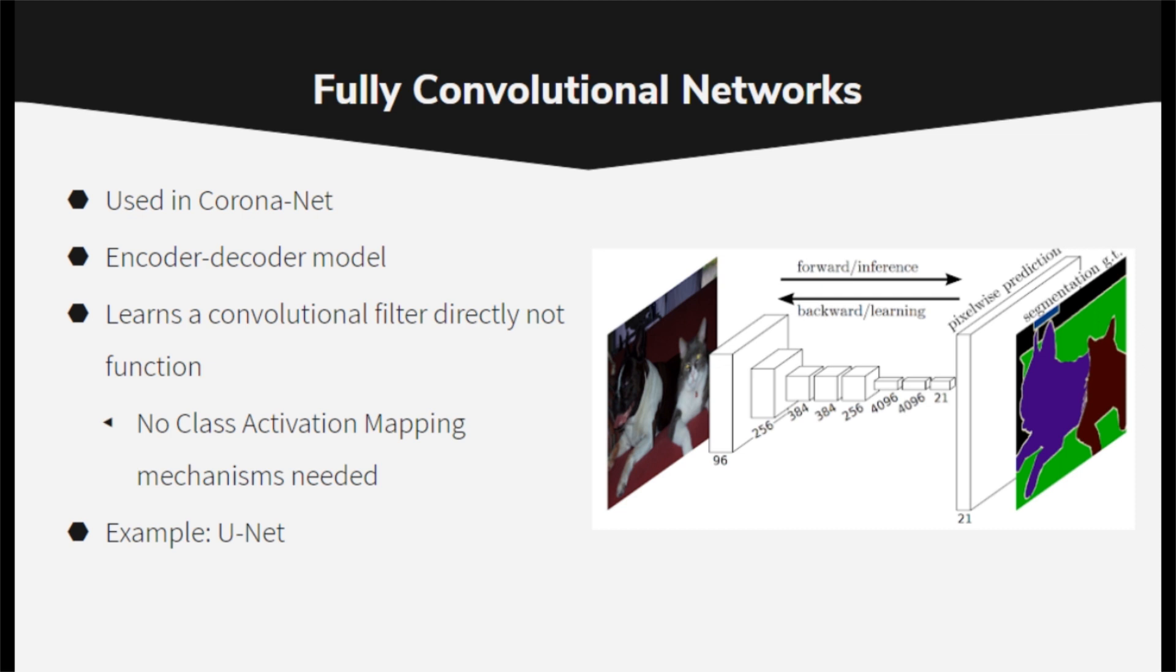To delve into the neural network architecture of Coronanet segmentation, I utilized the UNET architecture. UNET is an application of the fully convolutional network, which is an encoder-decoder model with largely symmetrical contracting and expansive halves.